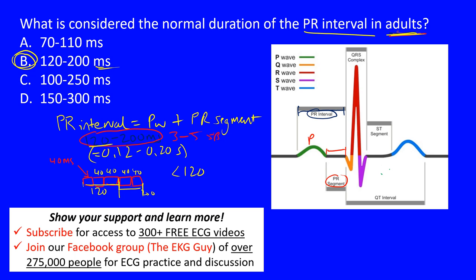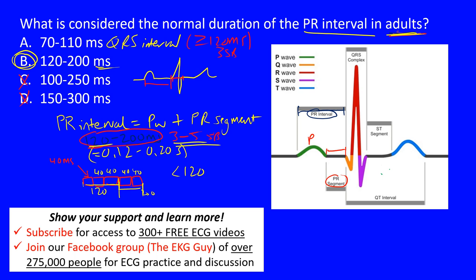The normal PR interval in adults is 120 to 200 milliseconds, or three to five small boxes. The normal QRS interval is 70 to 110 milliseconds — from the beginning to the end of the QRS complex, starting right where the PR interval ends. Once you hit 120 milliseconds for the QRS, you're thinking intraventricular conduction delay. The answer is 120 to 200 milliseconds, or 0.12 to 0.20 seconds.